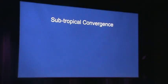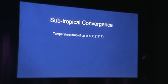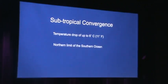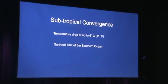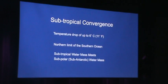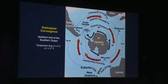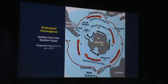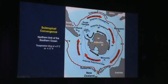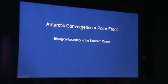So let's talk specifically about the subtropical convergence. It's a temperature drop of about 6 degrees Celsius or 11 degrees Fahrenheit that takes place at this boundary, and it's the northern limit of the Southern Ocean — defining the northern boundary where the subtropical waters to the north meet the sub-Antarctic waters to the south. We've been in the Southern Ocean since leaving Ushuaia and will be in it virtually until we leave the Falkland Islands.